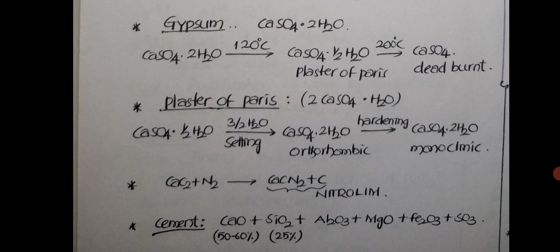CaCN2 plus C, this combination is called nitrolim. Cement: CaO, SiO2, Al2O3, MgO, Fe2O3, SO3. In this CaO and SiO2 will be maximum. So this is about S block elements, very important points. You can comfortably listen to this. Beyond this, you don't expect any questions in NEET examination or JEE mains examination. Have a wonderful time.